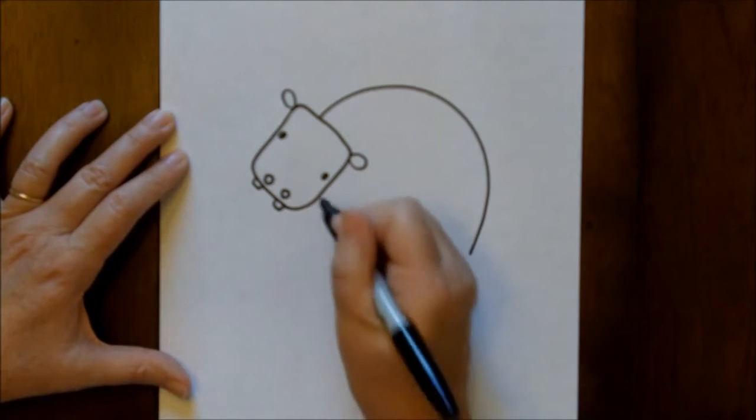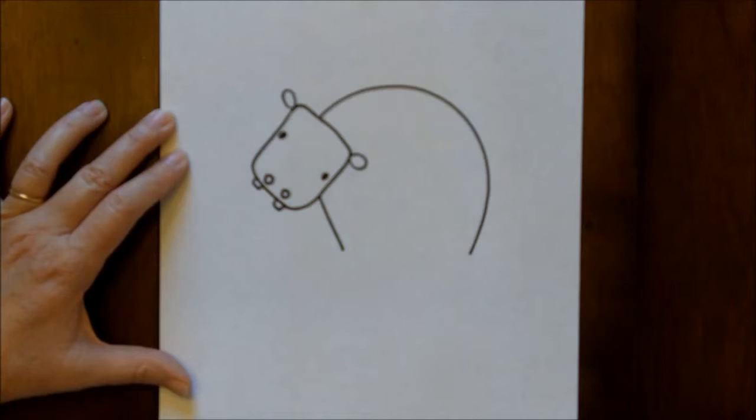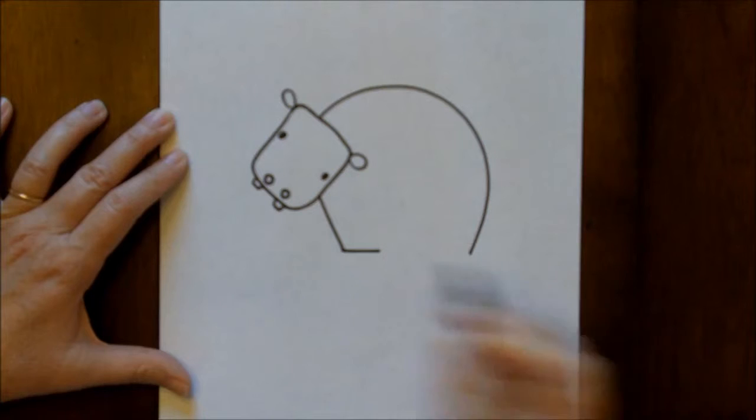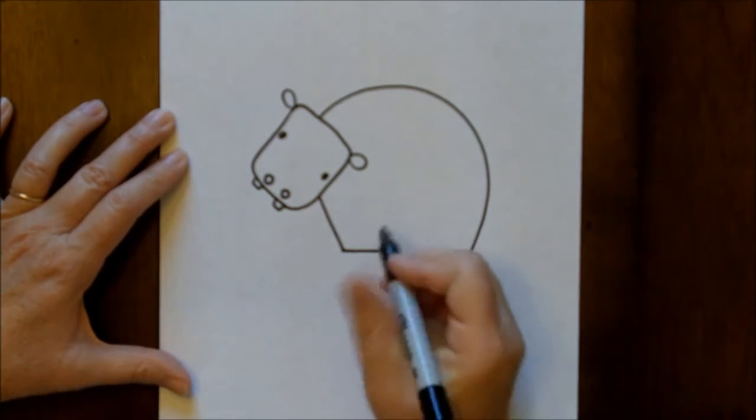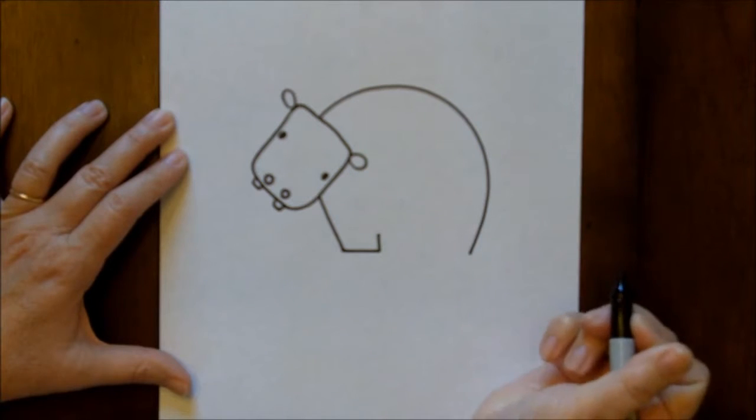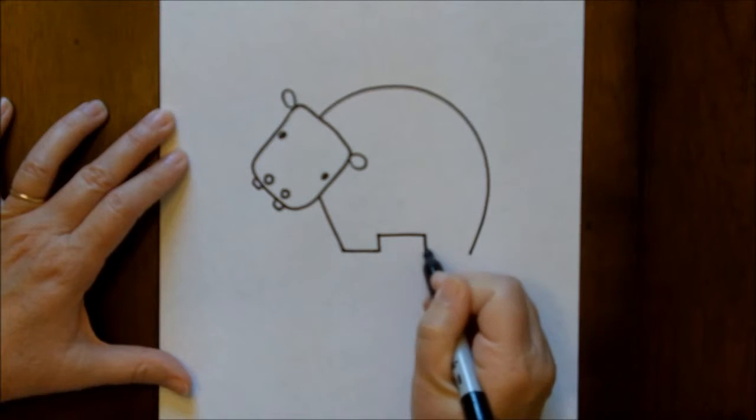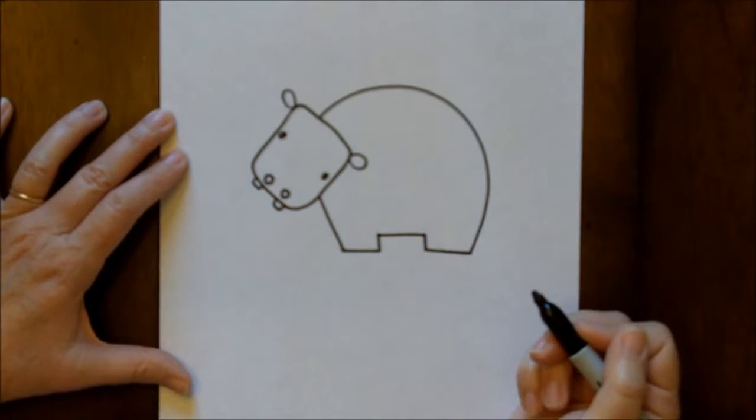For the front of his body, we're just going to have a straight line coming down. And for his feet, we'll go a straight line going towards the other curved line. Then up, then over for his tummy, and then down, and then basically over to this curved line, and close it up.